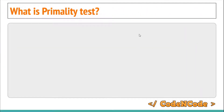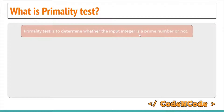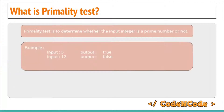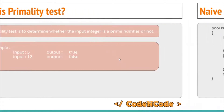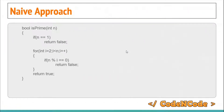First of all, what is a primality test? A primality test is to determine whether the given integer is a prime number or not. So suppose the input is 5, the output should be true because 5 is a prime number, while if the input is not a prime number, the output would be false.